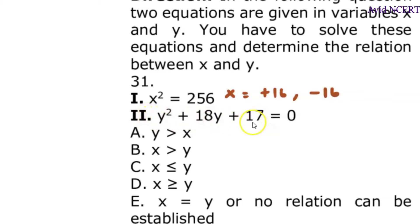To find the factors, multiply this and this, which is 17 times 1 equals 17. We have to get these numbers added or subtracted to get this middle number. 17 plus 1 is 18, which gives us y² + 17y + 1y + 17. So this 18y is written as 17y plus 1y.